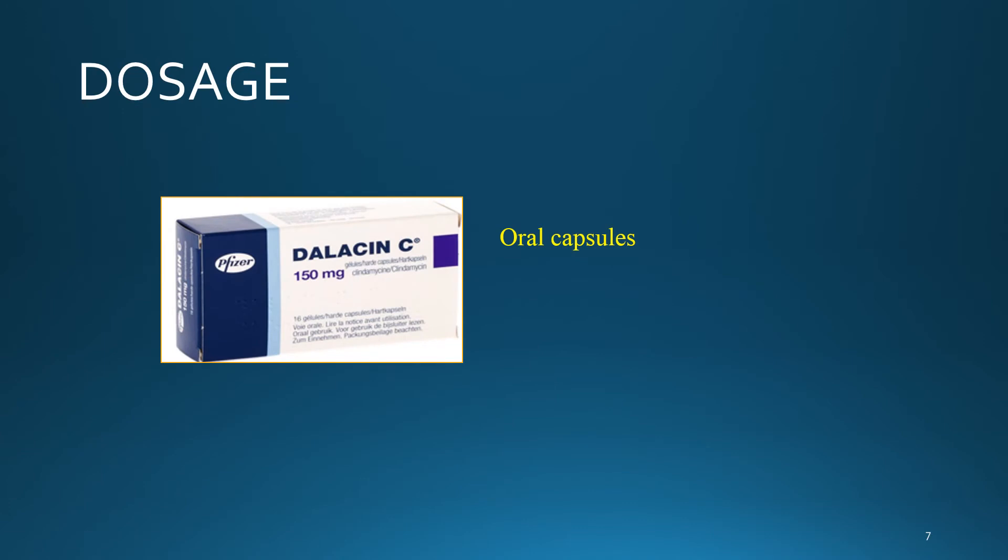The usual oral adult dosage of clindamycin is 300 to 450 mg every 8 hours for 7 days. The maximum dose of clindamycin, when given orally, is 600 mg every 8 hours.